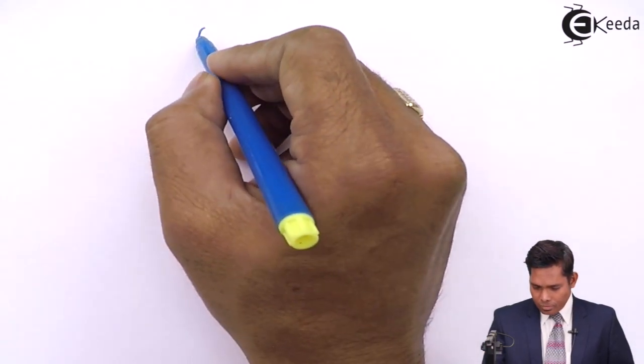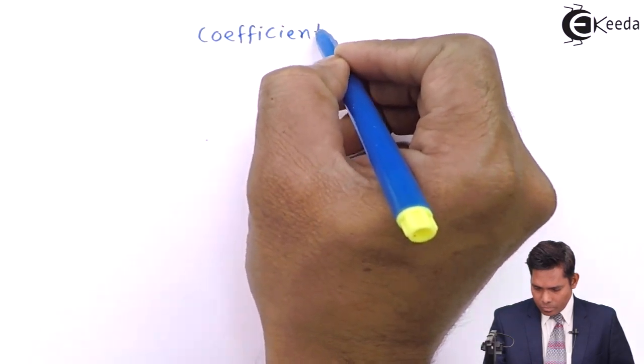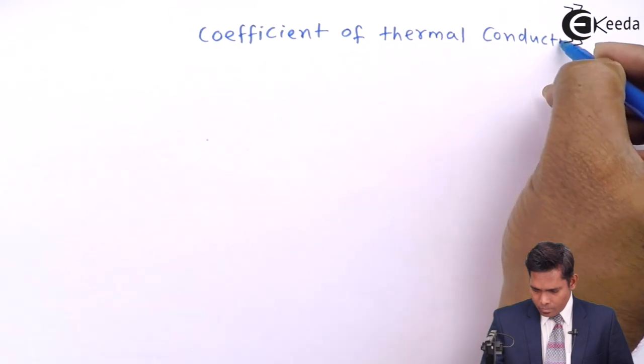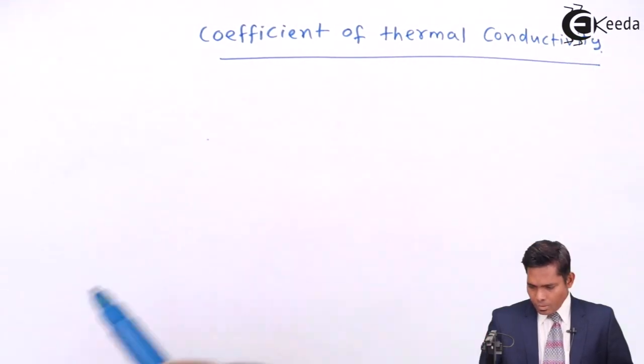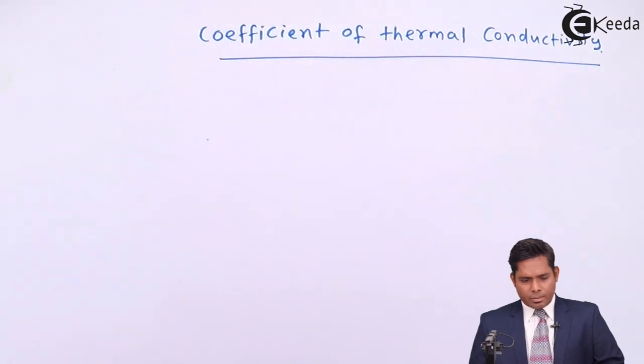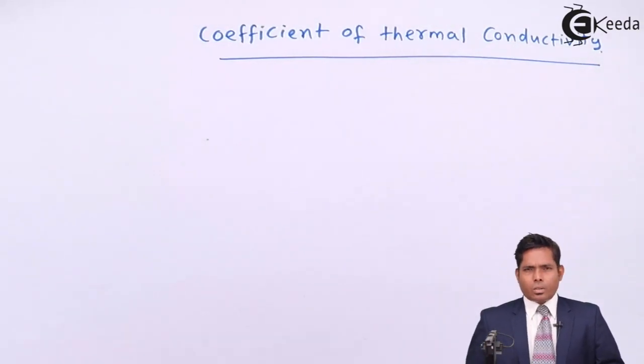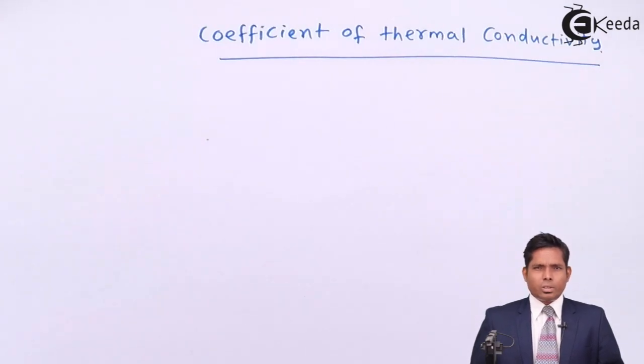Last time we discussed about thermal conductivity and tried to learn about the steady state. Now in this session we will discuss about the coefficient of thermal conductivity. The coefficient of thermal conductivity is a constant that is introduced in the proportionality equation.